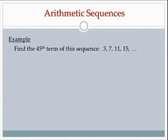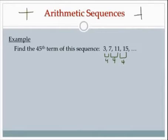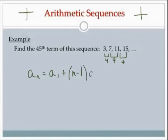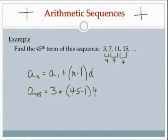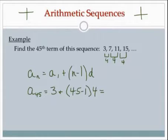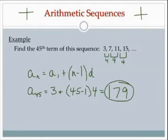So let's find the 45th term of this sequence. I can see that I'm adding 4 each time, which means this is an arithmetic sequence. I'm going to use the formula: a sub n equals a sub 1 plus n minus 1 times d. a sub n is the term I'm looking for, which is the 45th term. The first term is 3. I'm looking for the 45th term, so n is 45, and d is 4. You can just plug those numbers into your calculator: 44 times 4 is 176, plus 3 is 179.